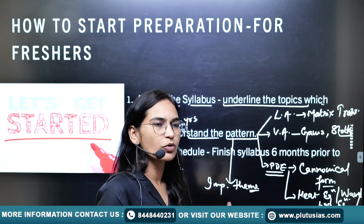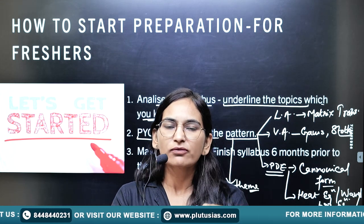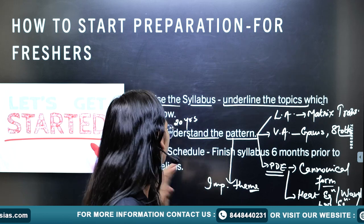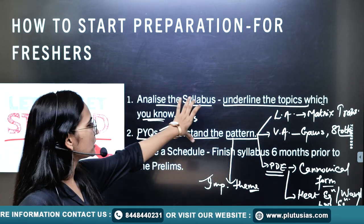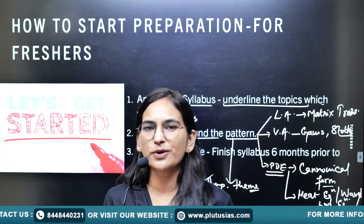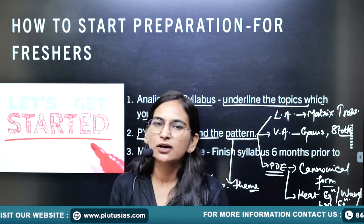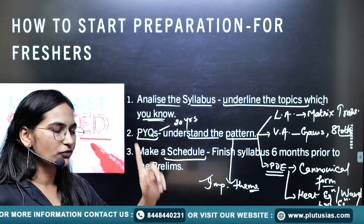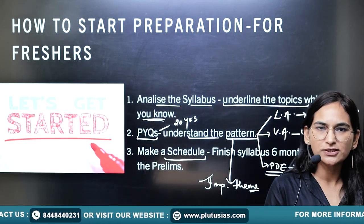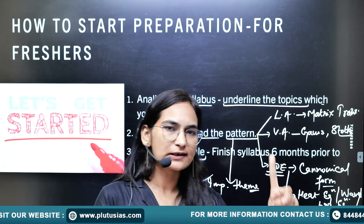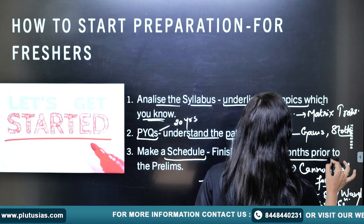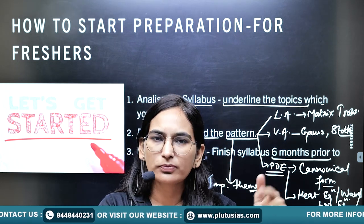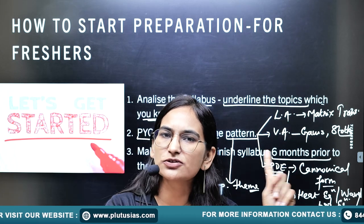You need to understand the pattern, understand the important themes, and also understand up to which difficulty level UPSC is asking questions. After going through these two navigators — syllabus and PYQs — it is time for action. First, make a schedule for the entire syllabus. One key guide: if you are preparing for maths optional, you should finish your syllabus at least six months prior to the prelims.